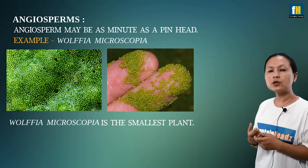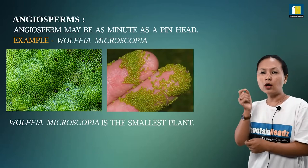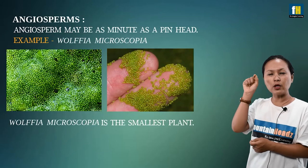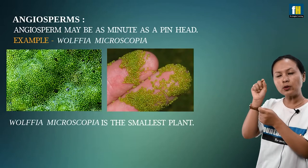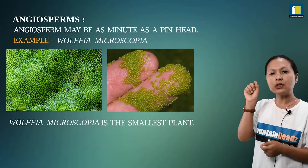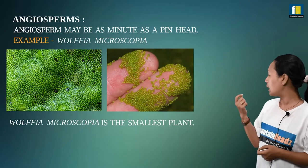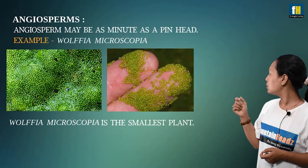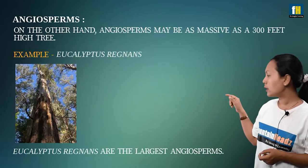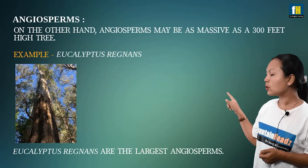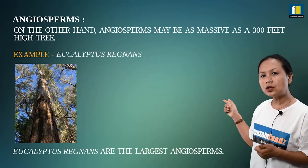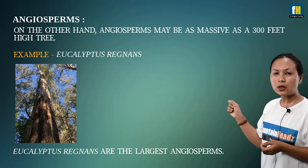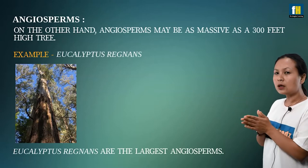Angiosperms also vary greatly in size. The smallest angiosperm is Wolffia, which is a very tiny plant. On the other end of the scale, there are also the largest angiosperms, showing the enormous size range within this group.